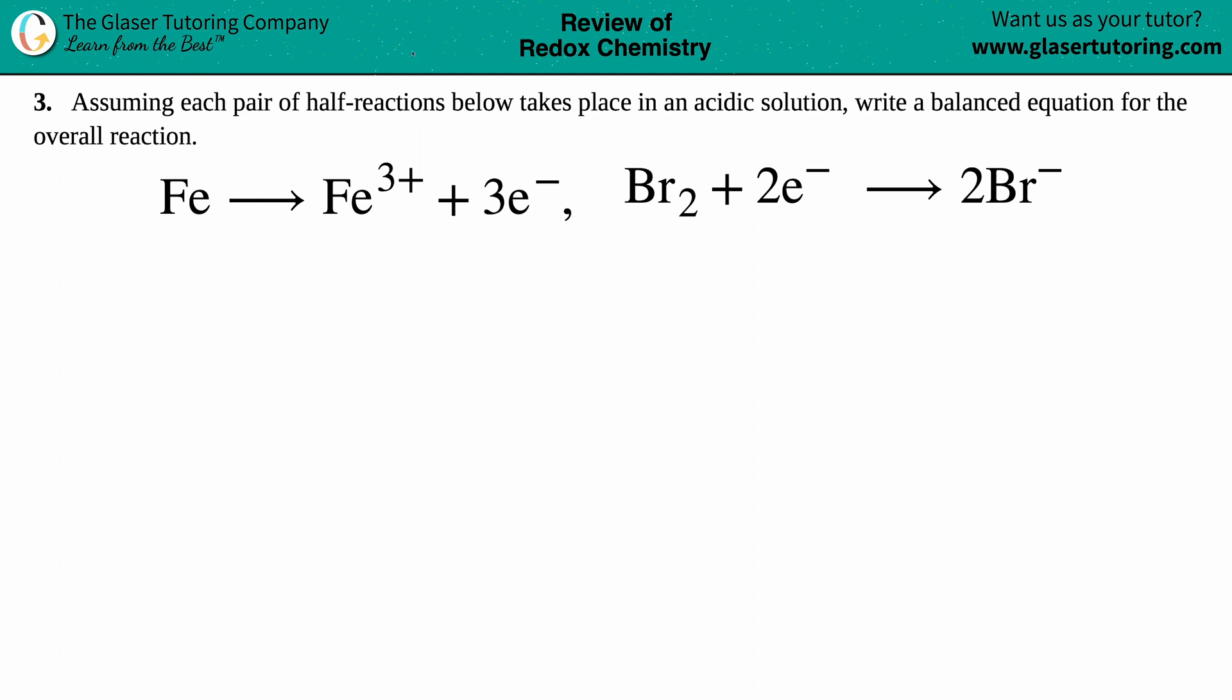Number three: Assuming each pair of half-reactions below takes place in an acidic solution, write a balanced equation for the overall reaction. So now we have our two half-reactions. We have the iron one: Fe yields Fe³⁺ plus three electrons. Remember, just e⁻ means they're just lonely electrons. And then we have the bromine half-reaction: Br₂ plus two electrons yield two Br⁻.